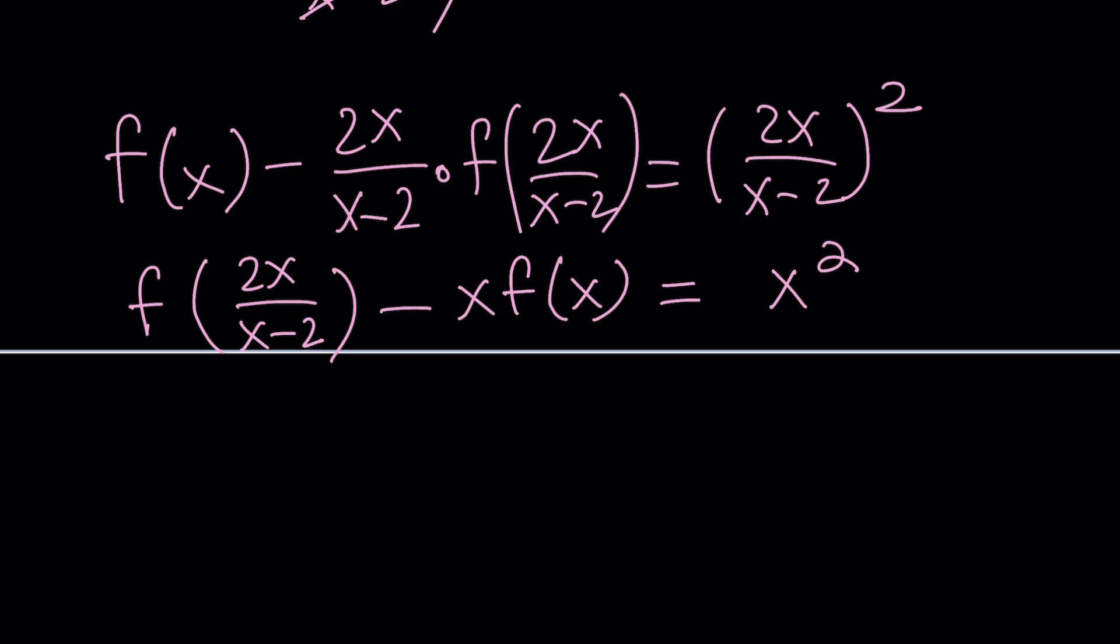Now, what can you do? This is a system of equations, and we want to solve for f of x, so why not just get rid of this expression right here? And to be able to do that, we're going to do the following. Multiply the second equation by the opposite of the coefficient of f of 2x over x minus 2. In other words, we're going to multiply the second equation by this. So let's do that. We're going to multiply by 2x over x minus 2, but that's the whole thing. And let's go ahead and write the resulting equations.